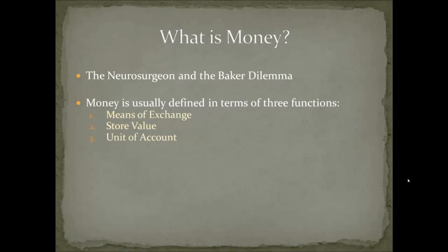Money is usually defined in terms of three functions. The first is a means of exchange, the second is a store of value, and the third is a unit of account. For the means of exchange: we don't want to build a society where every time you want something you have to find something that person wants in return. Instead, let's create a standard unit — a dollar, a pound, a euro — where the neurosurgeon can acquire these by doing his job and then spend them any way he or she sees fit.